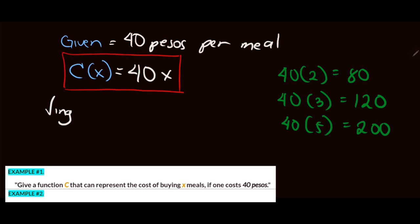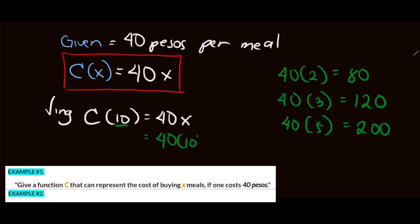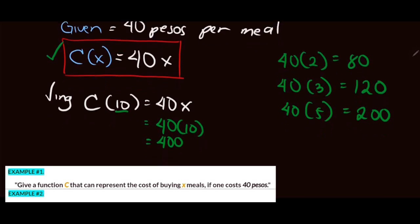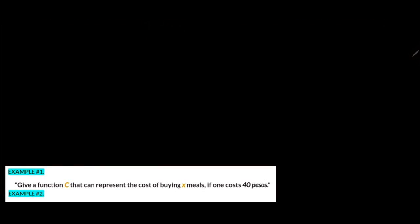Let's say you want to buy 10 sets of meals, so we have C of 10, which equals 40 times X. Since the value of X is 10, we have 40 times 10, and that equals 400 pesos. So that's our function and it correctly represents our given situation.